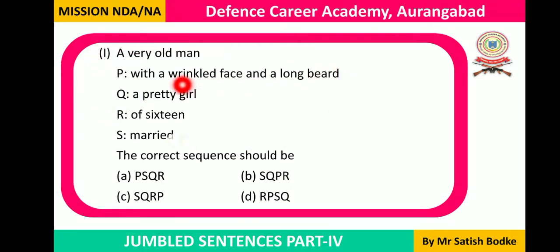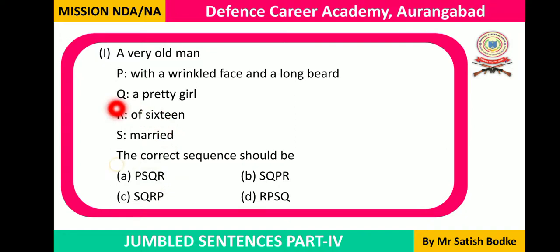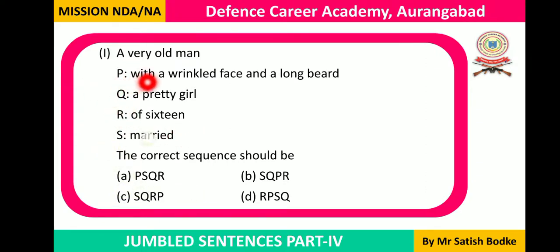This is the complete subject with modifiers. After this detailed subject, we surely need a verb. The verb is 'married.' A very old man with a wrinkled face and a long beard — whom did he marry? We need a noun phrase as an object: 'a pretty girl of 16,' meaning a pretty girl who was 16 years of age. So our sequence forms as P, S, Q, R — option A is the answer.